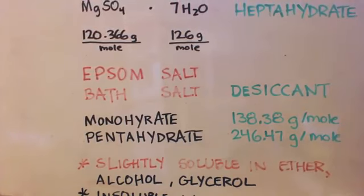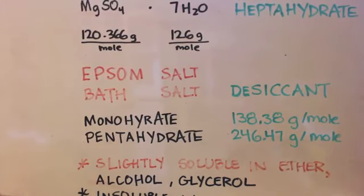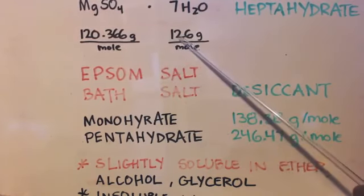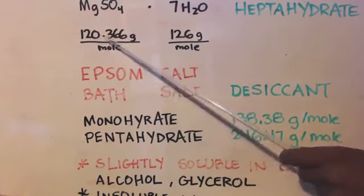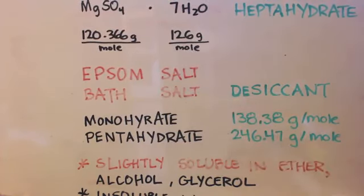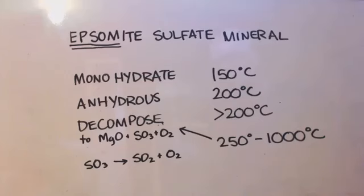Seven waters, that's a lot of water. I mean it actually absorbs more water than it actually weighs. If I have 120 grams I can absorb 126 grams of water. The Epsom salt, the mineral that Epsom salt comes from is called Epsomite sulfate mineral. So you can see why they call it Epsom salt.